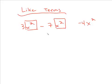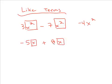The same thing works for adding. Let's say we have negative 5x plus 8x — these are like terms because they both have x's. So negative 5 and positive 8 gives you positive 3x, so that would be your answer.